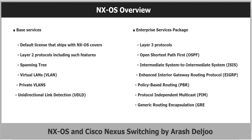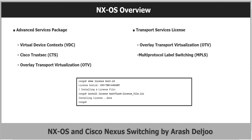The next is the enterprise service package. It provides Layer 3 protocols such as Open Shortest Path First or OSPF, Border Gateway Protocol or BGP, Intermediate System to Intermediate System or ISIS, Enhanced Interior Gateway Routing Protocol or EIGRP, Policy-Based Routing or PBR, Protocol-Independent Multicast or PIM, and Generic Routing Encapsulation or GRE.